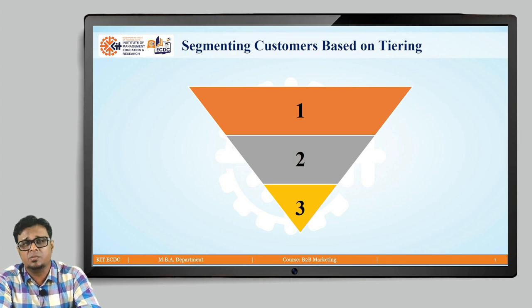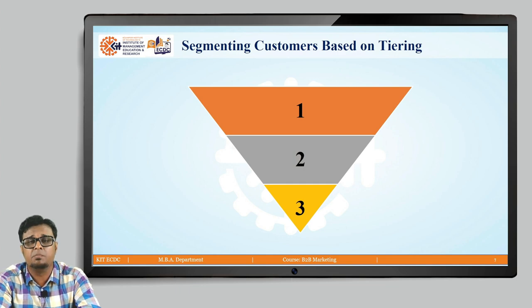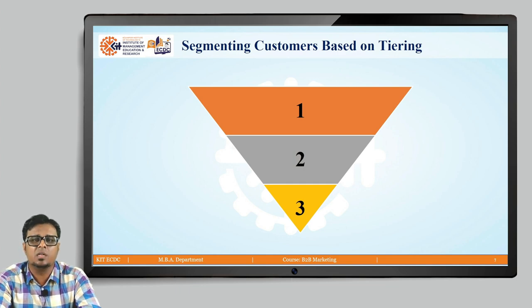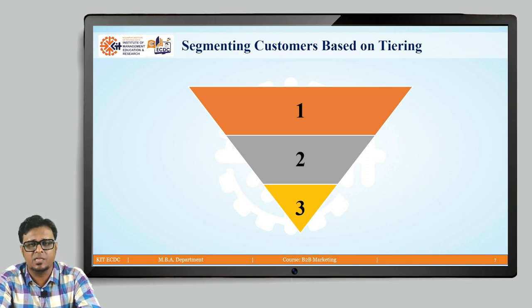Segmenting customers based on tiering can be done on the basis of revenues generated by businesses. Tier 1 will have more revenue, Tier 2 will have less than that, and Tier 3 will have the least.